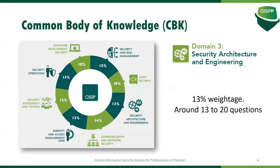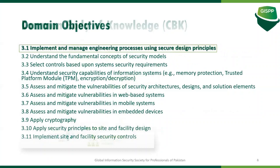We have eight domains and have done domain one and domain two, which is around 25% of the overall coverage for the whole exam. Today we'll start the third domain — security architecture and engineering — which is around 13% of the total exam, meaning around 13 to 20 questions depending on the number of questions shown to you in the exam. Today we'll cover objectives 3.1 through 3.8, and in the next session we'll do 3.9, 10, and 11.